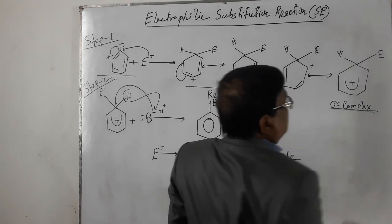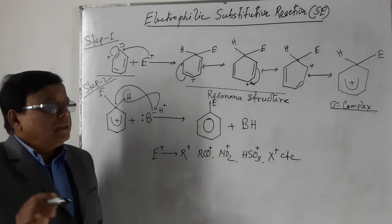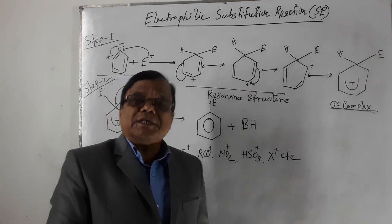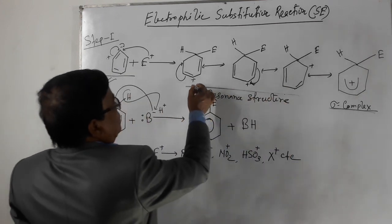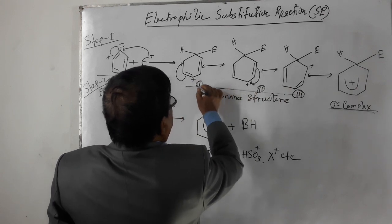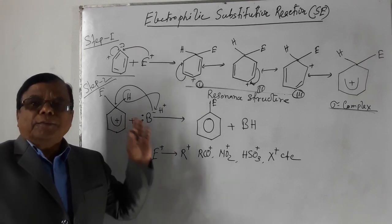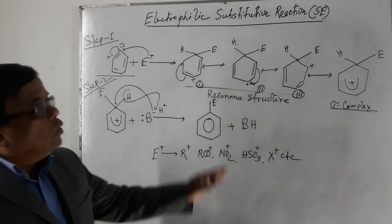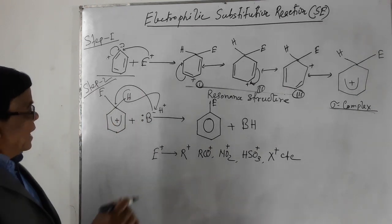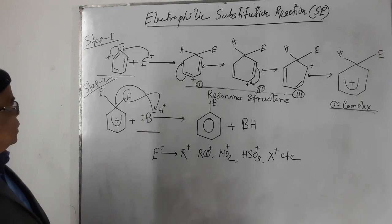This sigma complex is unstable. The aromaticity of benzene is destroyed and the sigma complex is formed by three resonance structures — structures one, two, and three. By these three resonance structures the sigma complex is formed. The aromaticity of benzene is destroyed, making it very unstable. Due to the instability of the sigma complex, it again reacts — which is step number two.